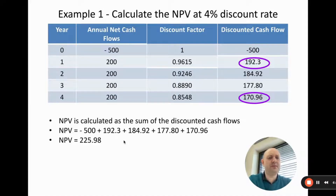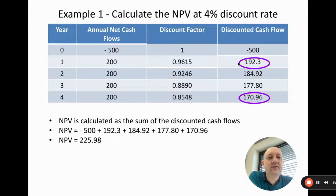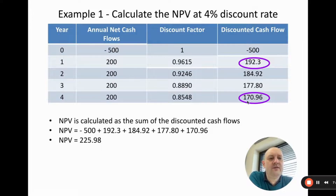What does this number represent? Without discounting, we get minus 500 plus 200 plus 200 plus 200 plus 200, which gives a profit of 300. The NPV of 222.98 does the same thing but discounts all cash flows at four percent inflation. Even though years one through four each have a cash flow of 200, year one is discounted to 192 and year four to 170 — because money received sooner is worth more, and inflation has less of an effect on it.